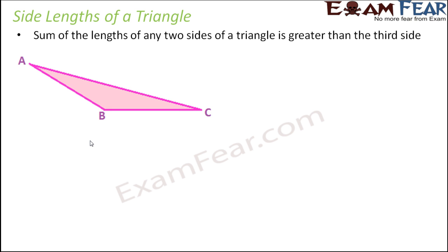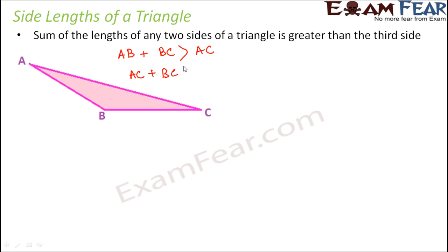Let us look at this triangle. As per this property, if you measure all three sides — A B, B C, and A C — you will find that A B plus B C is greater than A C. Similarly, A C plus B C is greater than A B, and A B plus A C is greater than B C.